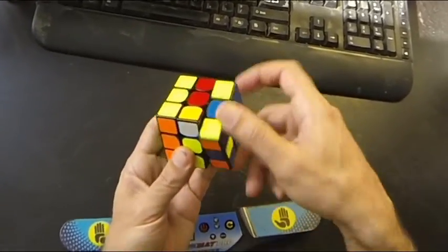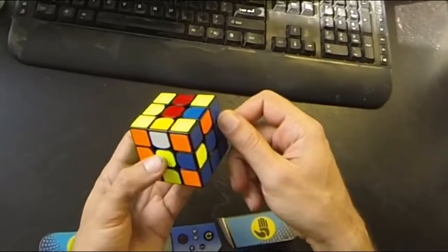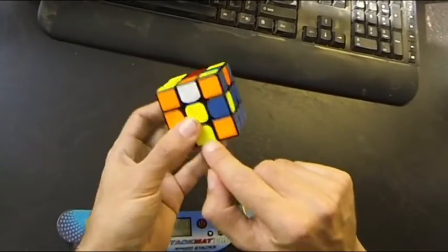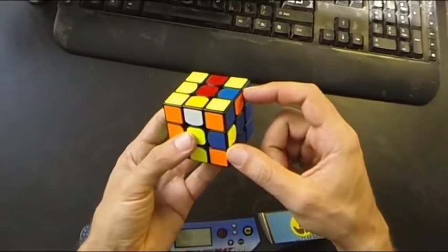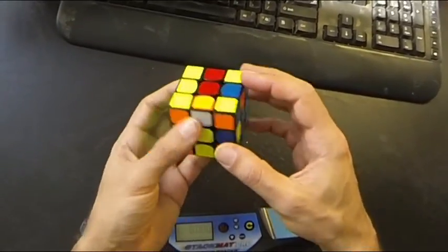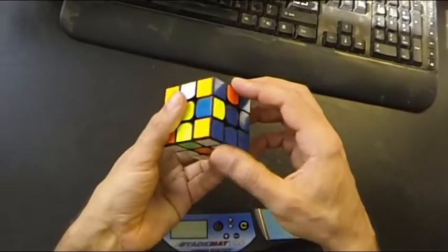Then I see I have two edge pieces left, so I do an R2, and now the last edge piece for the left side is down here at the DF position. This is a triplet as well, so I solve all three edge pieces at the same time.